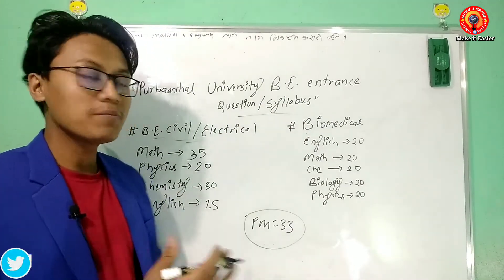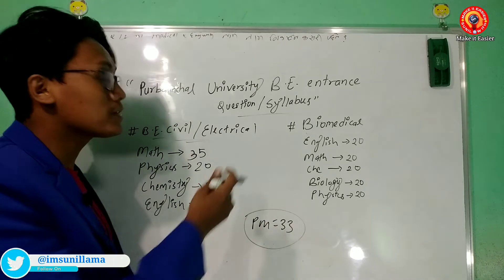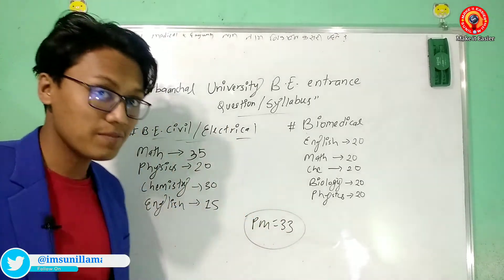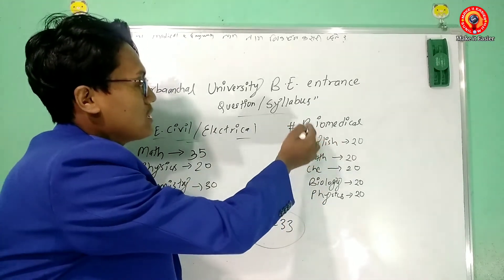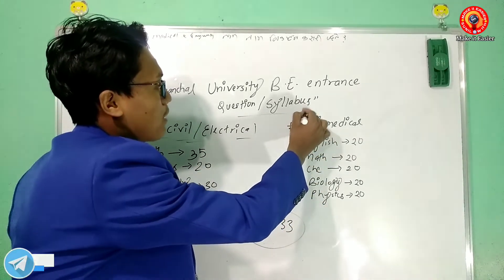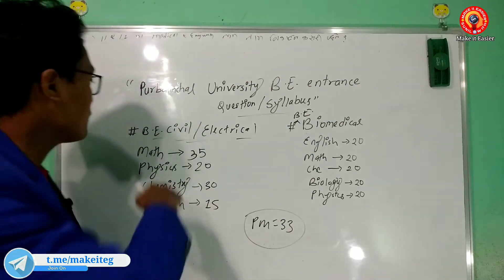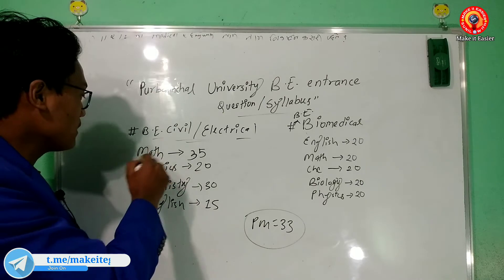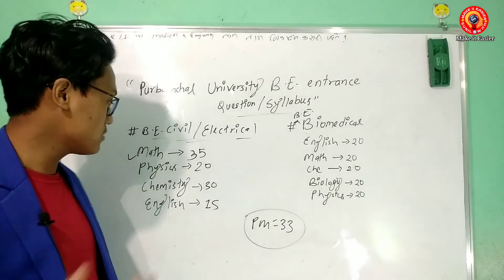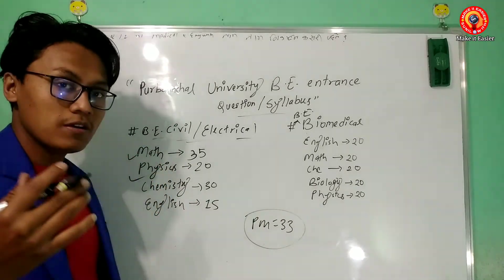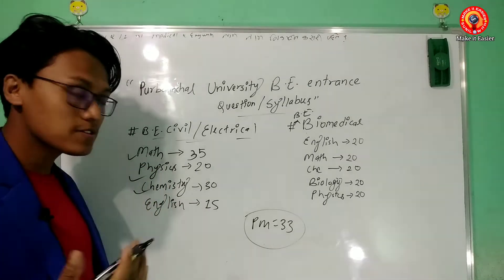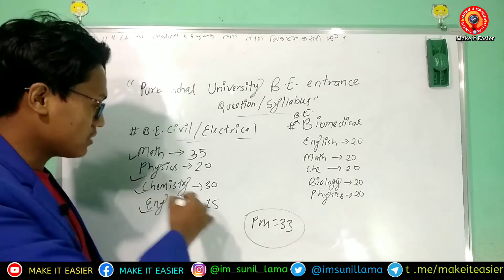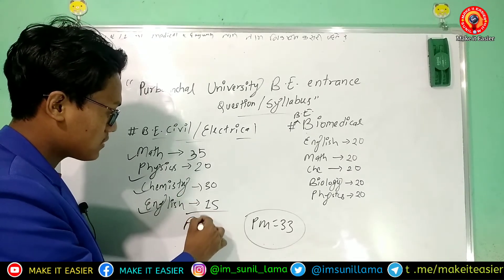We have to divide the syllabus. It is divided into architecture, mechanical, BE biomedical, BE civil, and electrical. For BE civil or electrical, we have to do: Math — 20 marks, Physics — 20 marks, Chemistry — 30 marks, English — 15 marks.